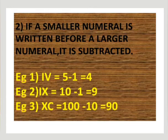Now rule number 2. If a smaller numeral is written before a larger numeral, it is subtracted. IV, example 1 IV, I is smaller than V. That means what? 5 minus 1, 4.